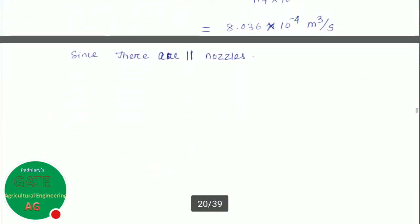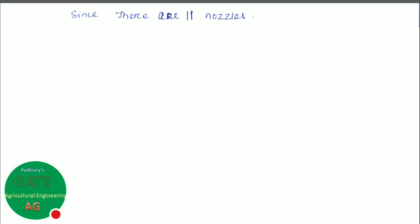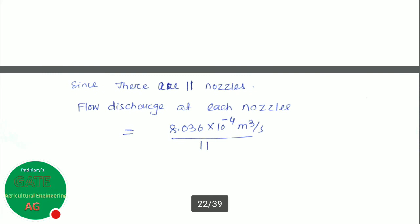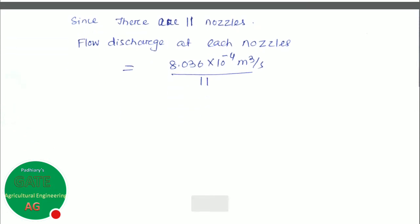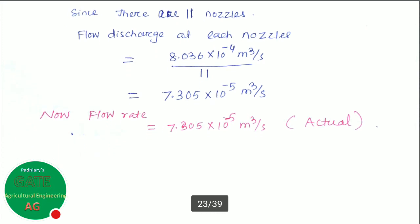There are 11 nozzles, and all the delivery from the pump should be delivered through the nozzles. Assuming no loss of liquid from the pipes, whatever the delivery from the pump is delivered through 11 nozzles. The individual discharge through each nozzle is total discharge divided by number of nozzles: 8.036×10⁻⁴ / 11 = 7.305×10⁻⁵ meter cube per second. This is the actual flow rate from each individual nozzle.